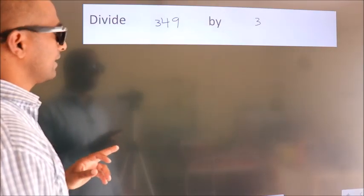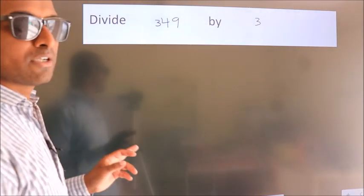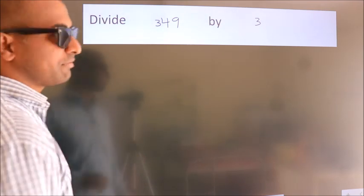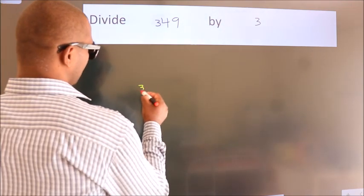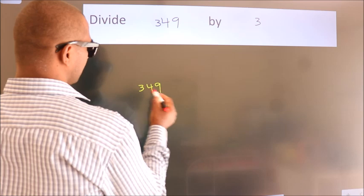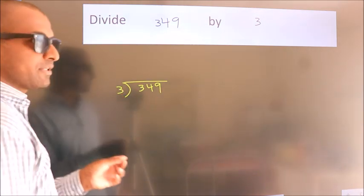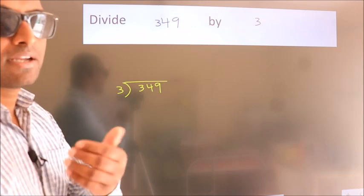Divide 349 by 3. To do this division, we should frame it in this way. 349 here, 3 here. This is your step 1. Next,